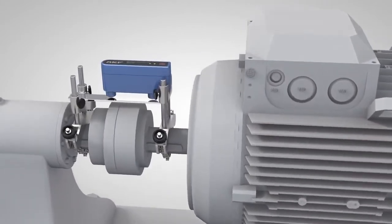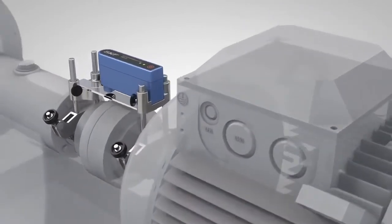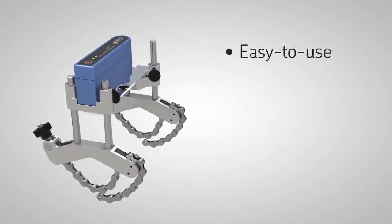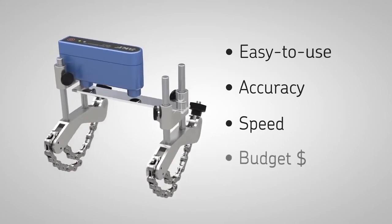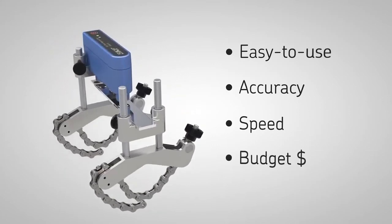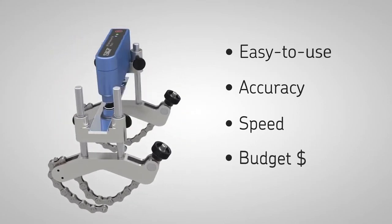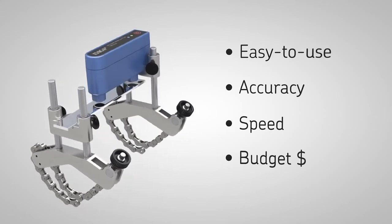In summary, the SKF shaft alignment tool TKSA 11 is an excellent choice for basic and advanced shaft alignment. It is easy to use, allows accurate and fast machine alignment and is affordable for almost every budget.